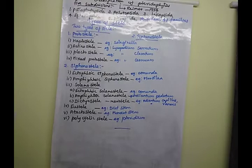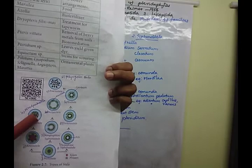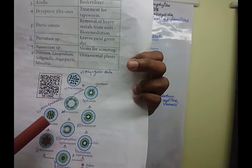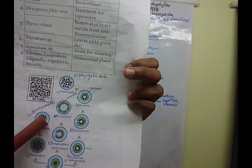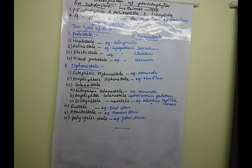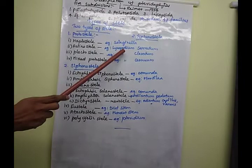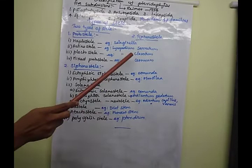The next sub-type is plectostele. In plectostele, the xylem plates alternate with the phloem plates - xylem is represented in a ribbon-like form alternating with phloem plates. This type of stele is called plectostele. The example is Lycopodium clavatum.